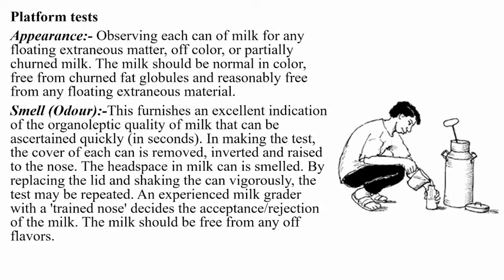For the platform test, appearance involves observation of each can — checking for floating extraneous matter, abnormal color, and partly churned milk. The milk should be normal in color, free from churned fat bubbles, and reasonably free from floating extraneous material. Basically, we check that the color is normal.